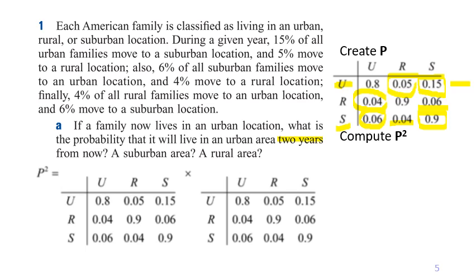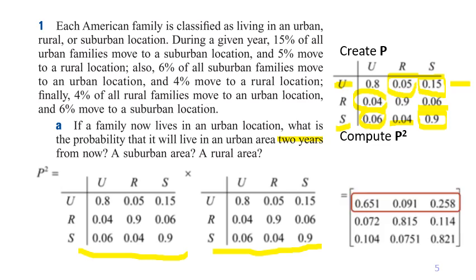To answer the two-years-from-now question, we compute P squared by multiplying P times P using matrix multiplication. From the resulting P squared matrix, a person currently living in an urban area has a 65.1 percent probability of staying in the urban area, a 0.91 percent probability of moving to a rural area, and a 25.8 percent probability of moving to a suburban area two years from now.